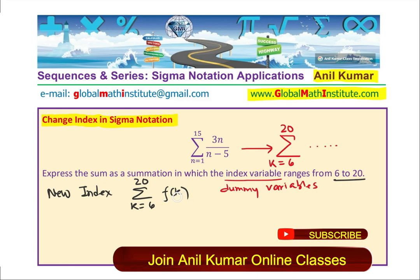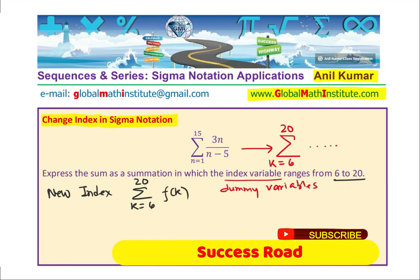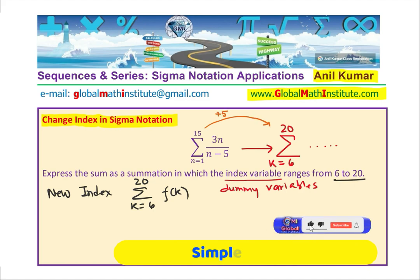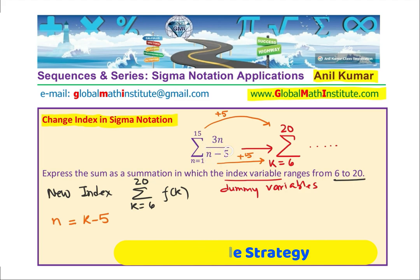So, the whole thing is that now we have to write this particular expression. What should this expression be? If you see, then what is happening is that going from 15 to 20, we are actually adding 5. Same is the case here. So, what we notice here is that the value of n is 5 less than k. So, we can say that n is equal to k minus 5. Then you get the same function, the same expression.